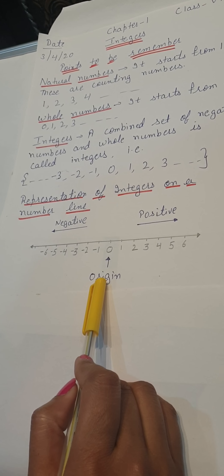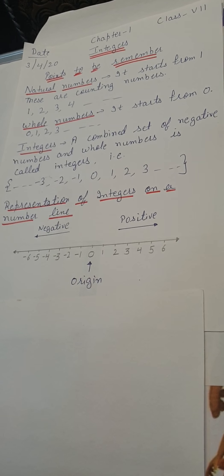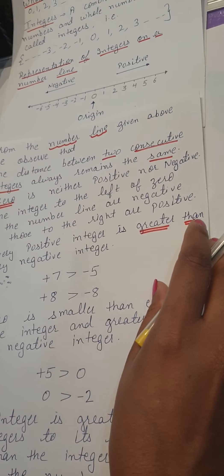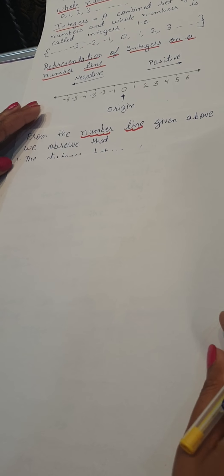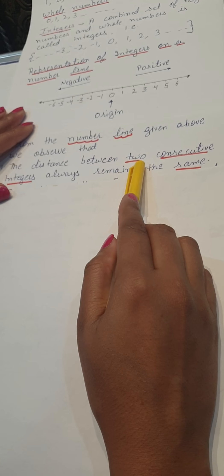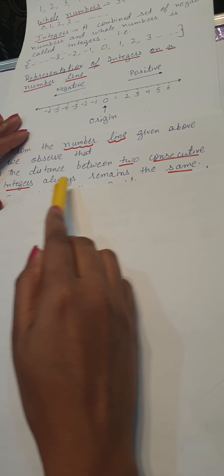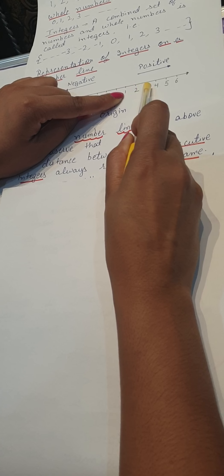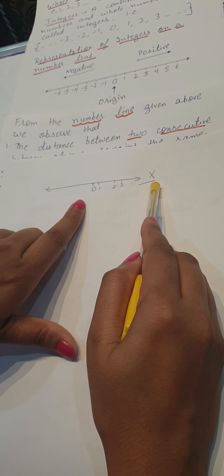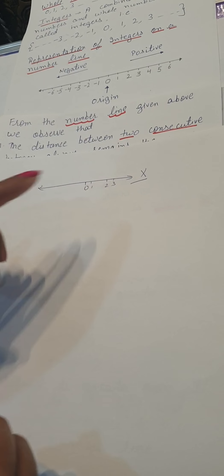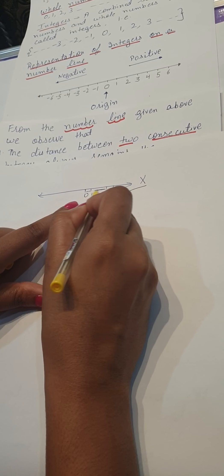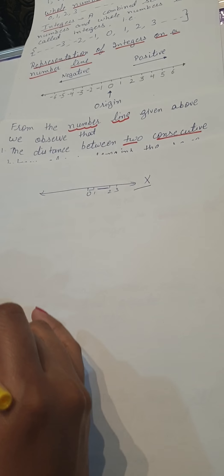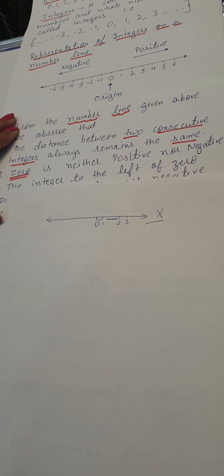Now we will see a few points from the number line — what we observe. The first point is: the distance between two consecutive integers always remains the same. Consecutive means, for example, the distance between 1 and 2 should be the same. If I draw 0, 1, 2, 3 and the gaps are unequal, that is wrong. The right way is that the distance should always be equal.